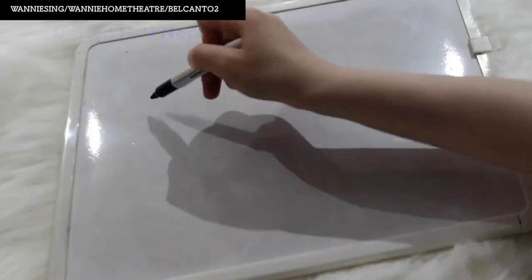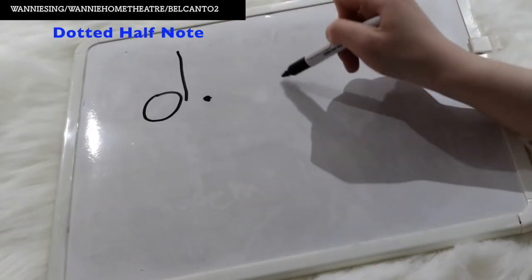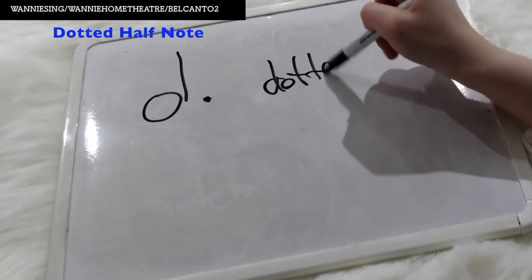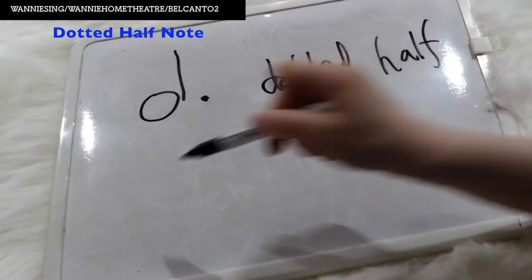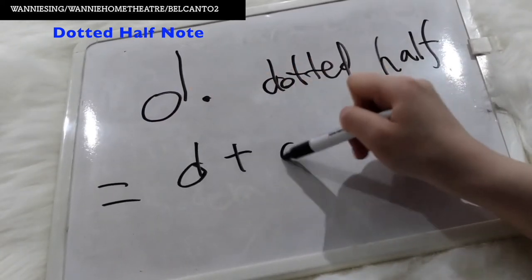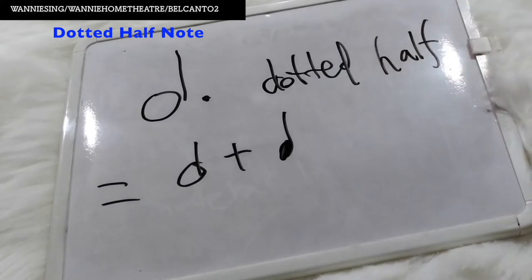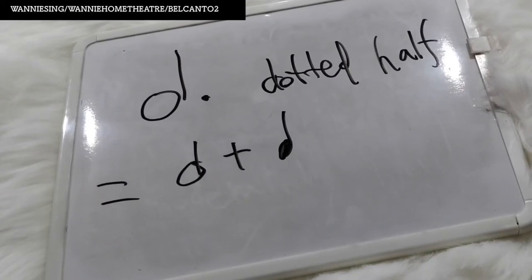The new note value that we are going to learn today is dotted half note. Please review what we have learned in the previous lesson. We have learned quarter note and half note. Quarter note gets one beat in the four-four time signature while half note gets two beats. Dotted half note gets three beats because it equals one half note plus one quarter note.